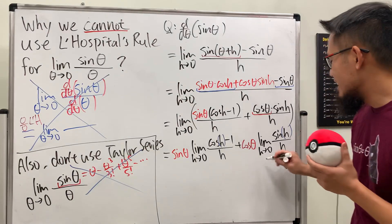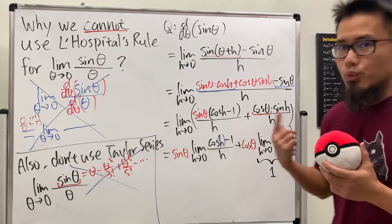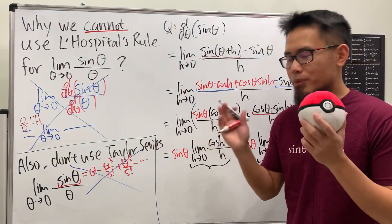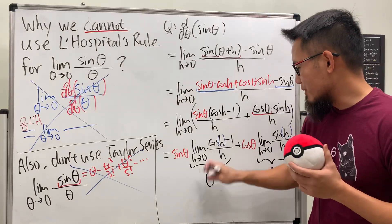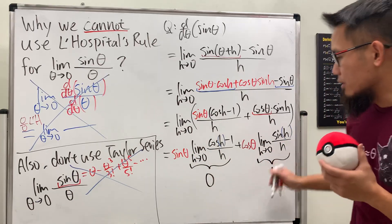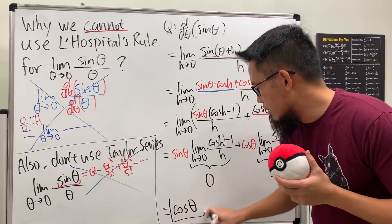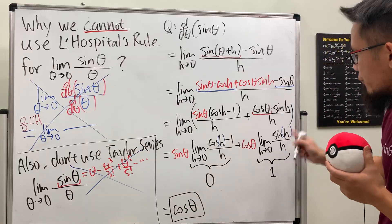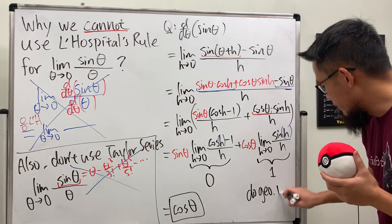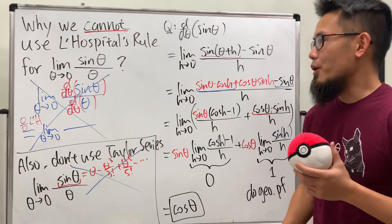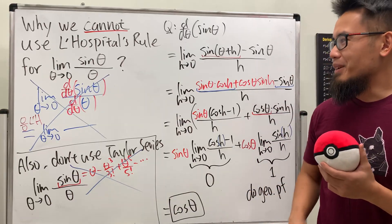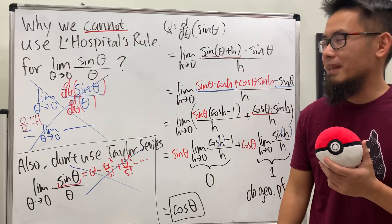The truth is you have to do a geometric proof to evaluate this limit. Once you do that correctly, you find the limit equals one. After you establish this limit the classical, proper way, you can use it to show the other standard limit equals zero. Then sine(θ)·0 = 0 and cos(θ)·1 = cos(θ), confirming the derivative of sine(θ) is cos(θ). So please do a geometry proof for this limit — don't use L'Hôpital's rule.